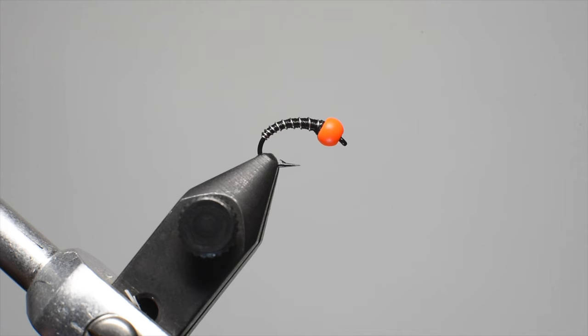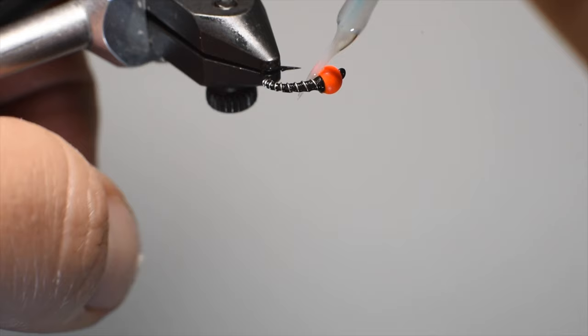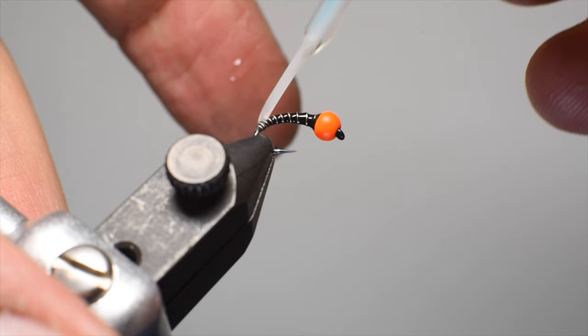So I'm just going to brush it on, just a real thin layer. And if you get too much, I actually take a little bit down into the wire that goes on to where I don't have thread. But if you put too much, just use your finger to remove the excess.